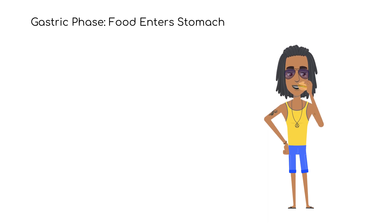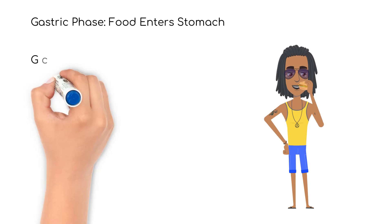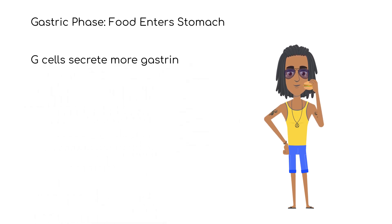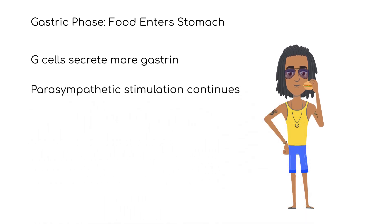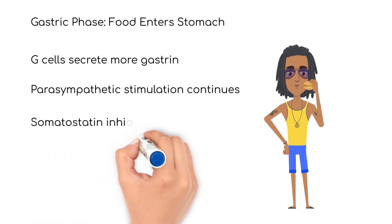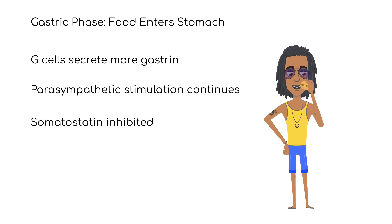During this phase, more gastric secretions occur — 50-60% — by way of stretching of the stomach and food stimulating stomach receptors. The G-cells secrete more gastrin in a positive feedback loop to help digest proteins. Parasympathetic stimulation continues to promote the same secretions we saw in the cephalic phase, along with the inhibition of the hormone somatostatin.